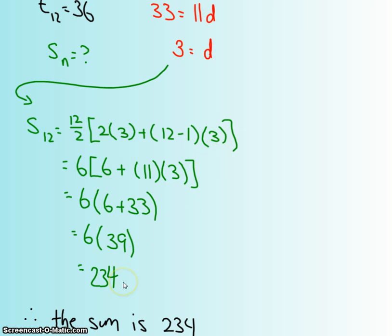So the sum of all 12 terms is 234, and I write a simple therefore statement.